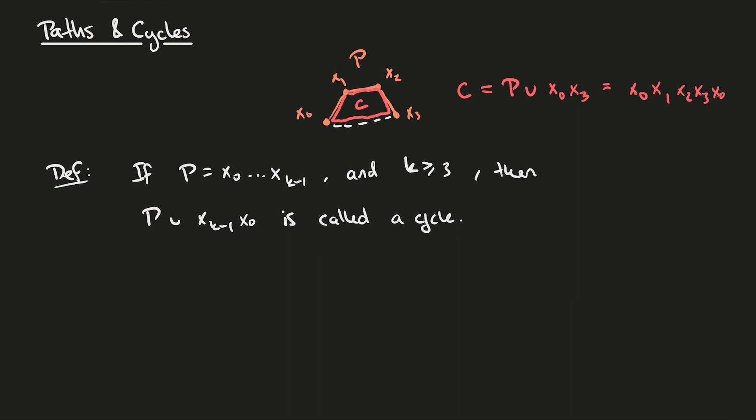We also define the length of a cycle as the number of edges in the cycle. And we write Ck for a cycle of length k. Therefore, our above example would be a copy of C4.